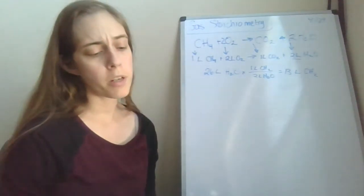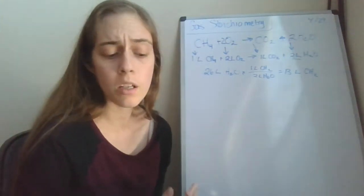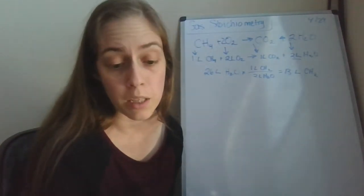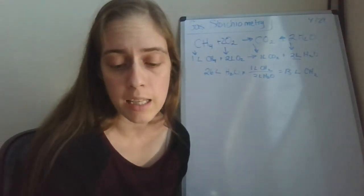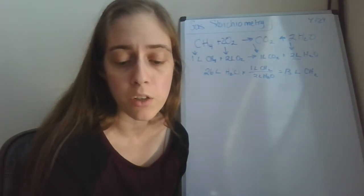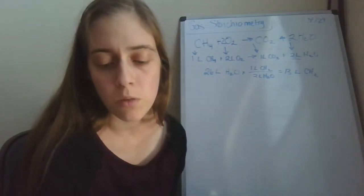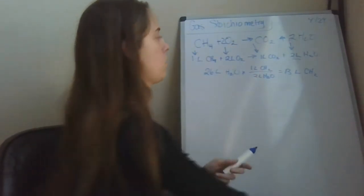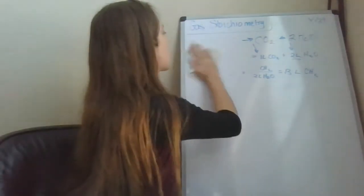The temperature and pressure affect all gases in the same way, so the conditions don't need to be considered. Let's talk about some volume-volume problems. Let's go through an example. What volume of oxygen gas is needed for the complete combustion of 4 liters of propane gas? Assume constant pressure and temperature. First of all, we need an equation.